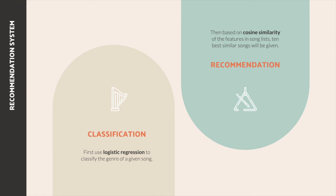Finally, we built a recommendation system with two main steps. First, we use logistic regression to classify the genre of a given sound. Then, we recommend the most similar sounds to it based on cosine similarity calculated on the feature matrix of our music library.